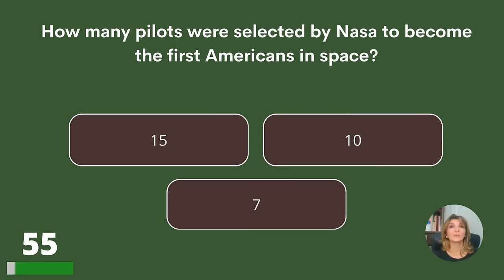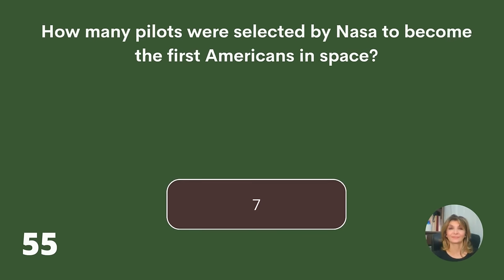How many pilots were selected by NASA to become the first Americans in space? Fifteen, ten, or seven? Answer: Seven.